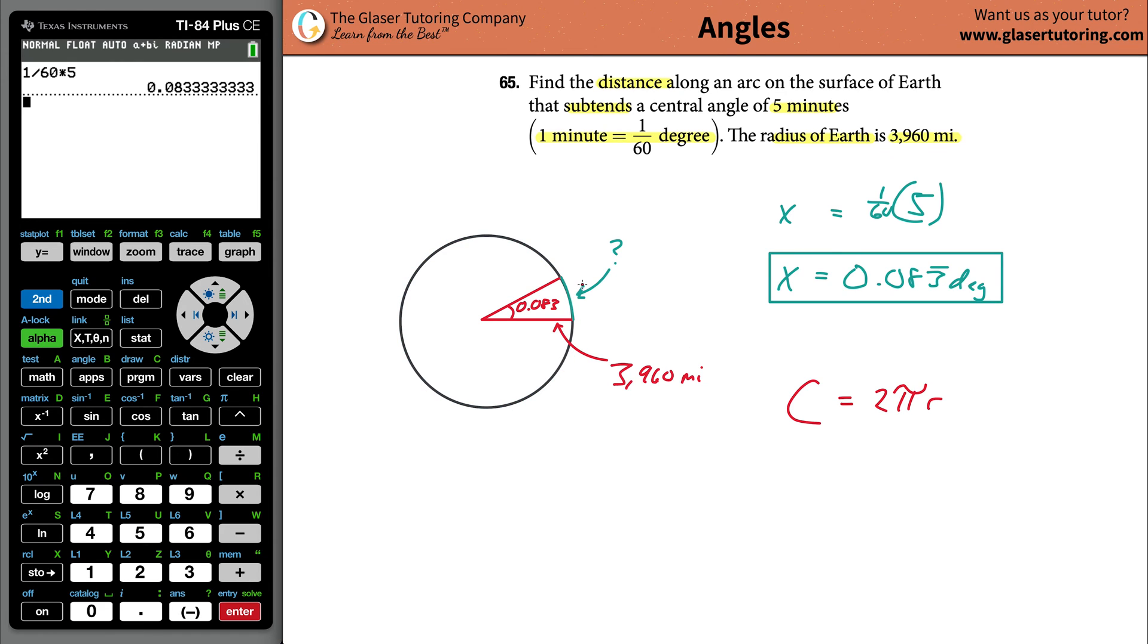But you don't have a whole entire edge, you only have a little fraction, right? Well, what fraction do you have? Well, if you know that there are 360 degrees in a full circle, and you know you're dealing with 0.083 of those degrees, you can find the fraction.